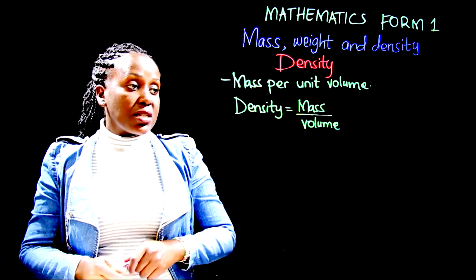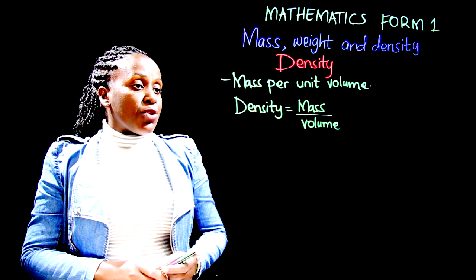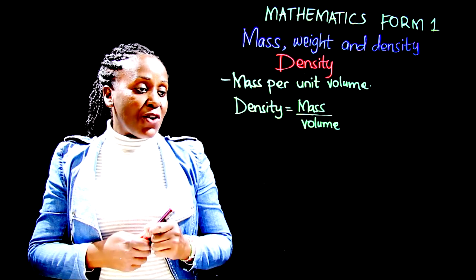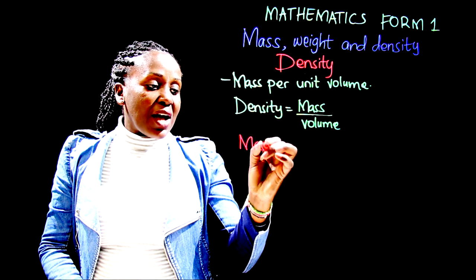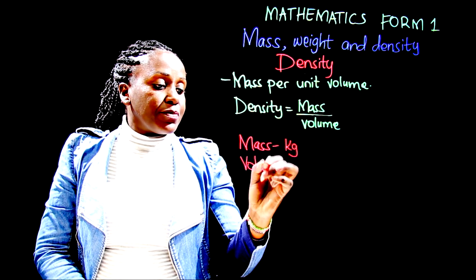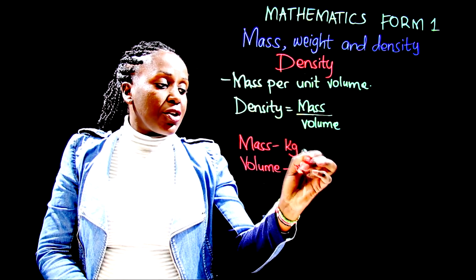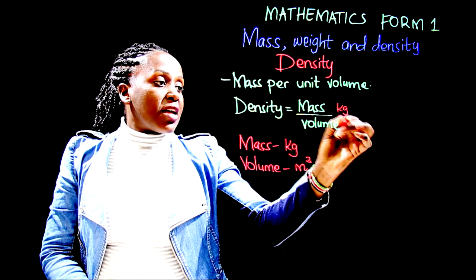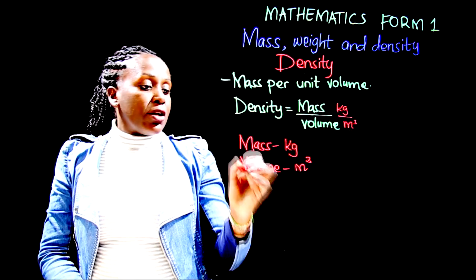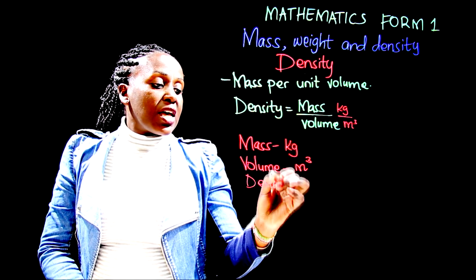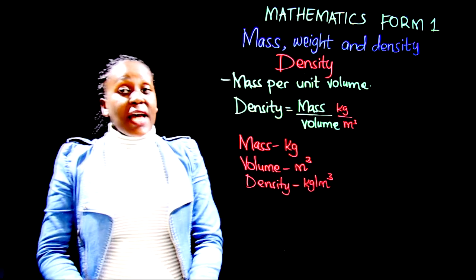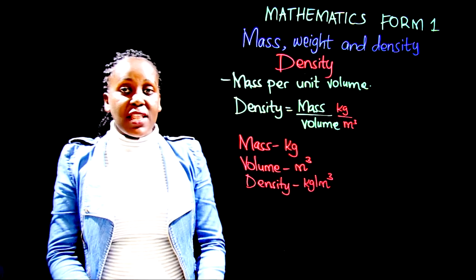Density equals mass over volume. The units of mass in SI are kilograms and the units of volume are meters cubed, so the SI unit of density is kilograms per meters cubed. Anytime you do your calculation, ensure you use the correct units.